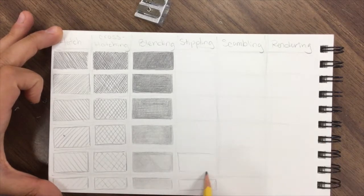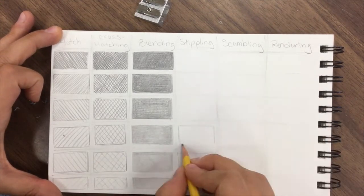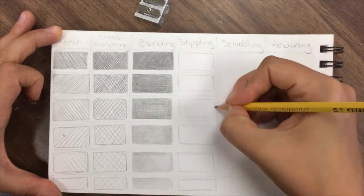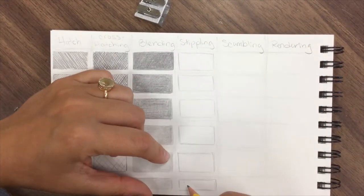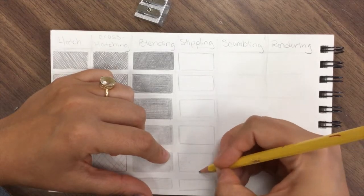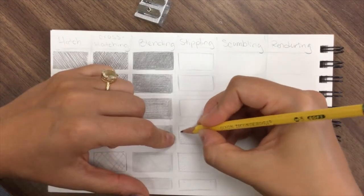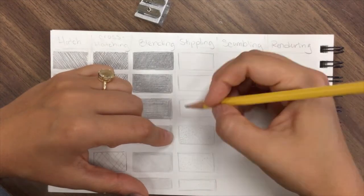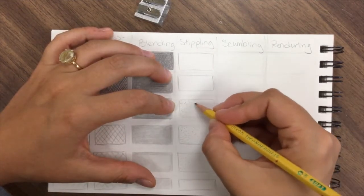One of the hardest techniques to achieve is actually stippling. For this technique, I would highly suggest that you sketch out your boxes first and that you work from lightest to darkest instead of darkest to lightest.